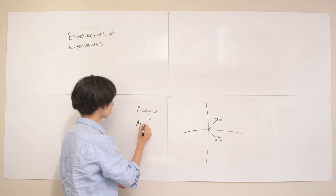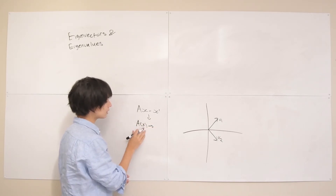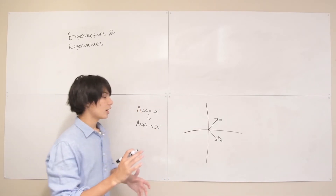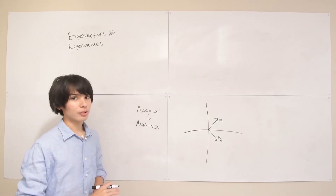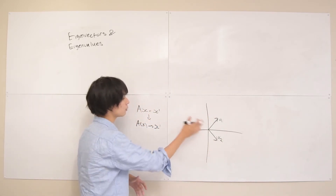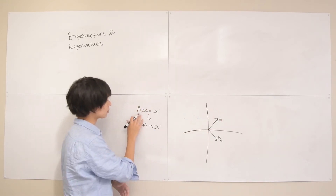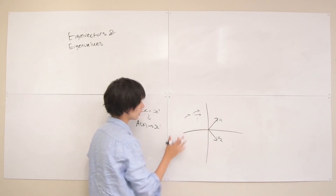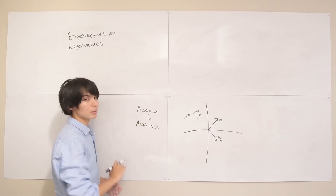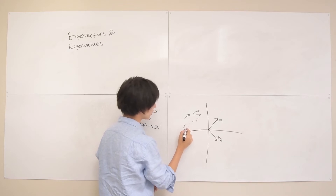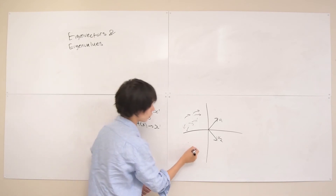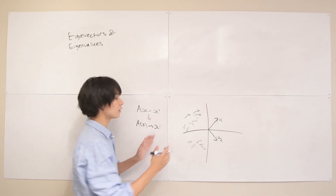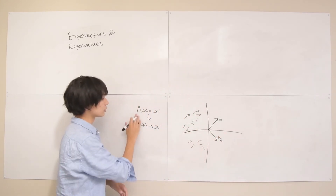Instead of thinking of Ax as some function that takes in a vector x and places it somewhere else in the Cartesian plane as x prime, a better intuition is to think of a linear transformation as a transformation of the entire space. Basically, every possible point x in the Cartesian plane gets fed into this function, multiplied by A, and moved to some other place x prime. You can imagine all the grid lines of your Cartesian plane getting shifted as a result of this matrix transformation.